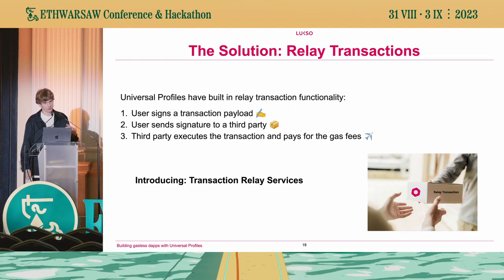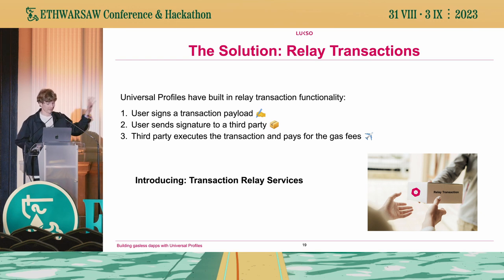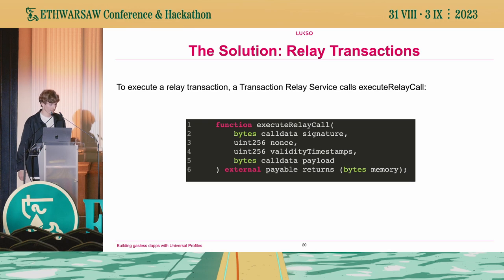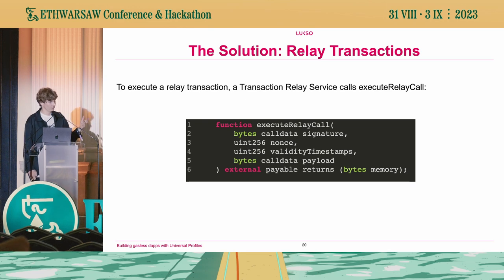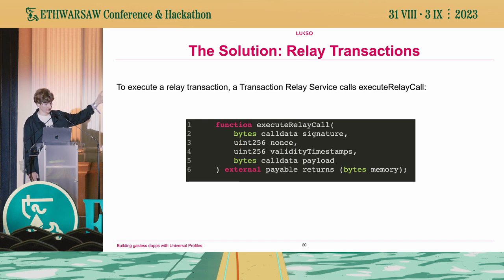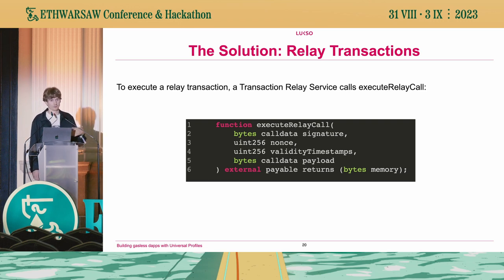This enables a whole new use case called transaction relay services — a service that is this third-party relay, the party actually interacting with the blockchain to execute transactions for Universal Profile users. This works and is enabled by a function called execute relay call on the Universal Profile. This is just a smart contract function, so it's available for anyone to call. That means anyone is able to create a transaction relay service — it's entirely open and accessible to anyone who wants to build it.